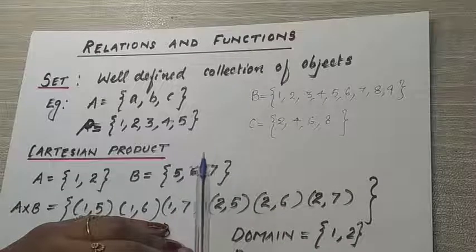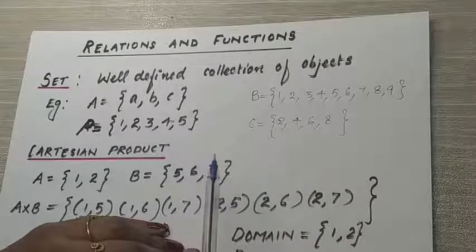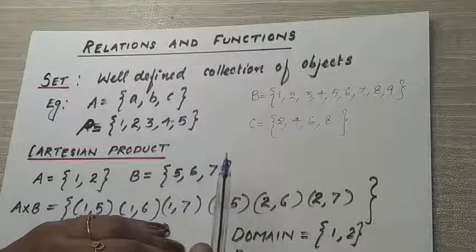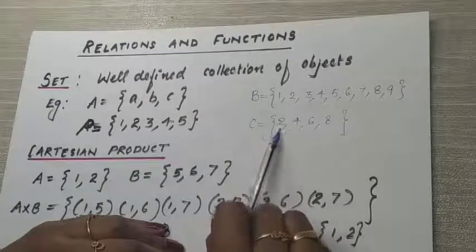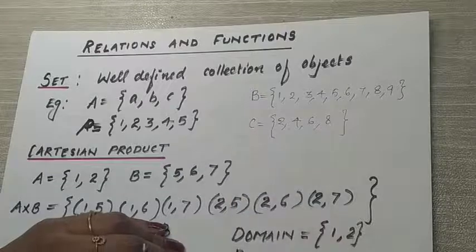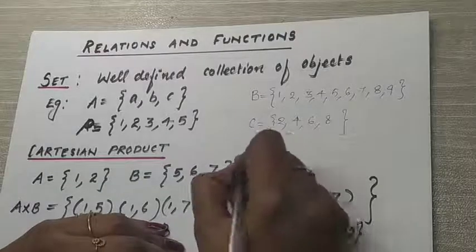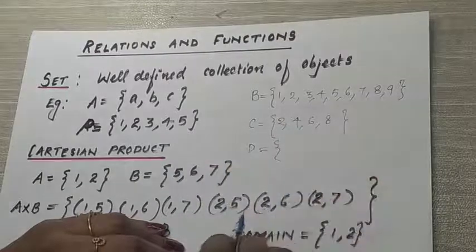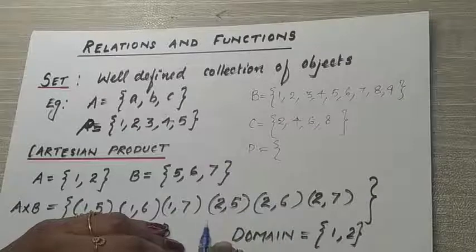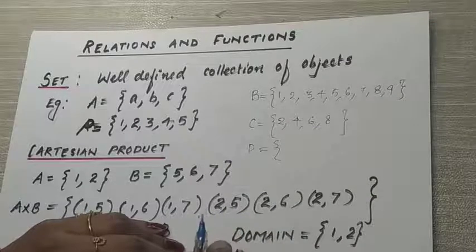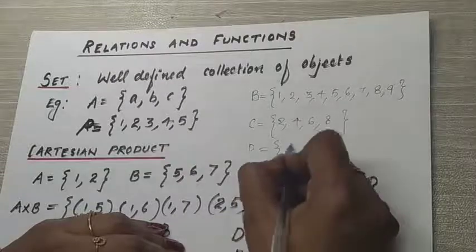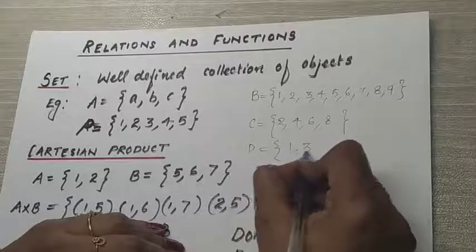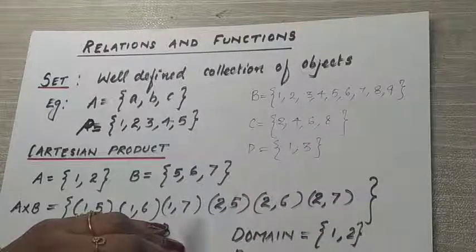If I say 'write the even numbers less than 10,' then those even numbers will be {2, 4, 6, 8}. If I say 'write the natural numbers which are less than 5,' then it will be {1, 3} — everyone will be writing 1 and 3.